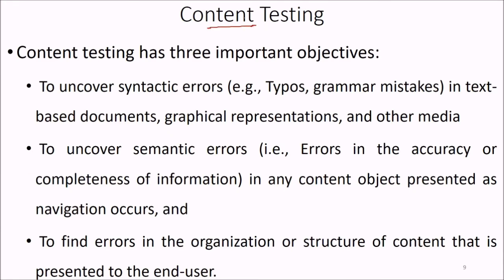In content testing, there are three important objectives. First, we want to uncover syntactic errors like typos and grammar errors in documents, graphical representations, and other media. Second, we want to uncover semantic errors — errors in the accuracy or completeness of information or any content object presented as navigation takes place. Third, we need to find errors in the organization or structure of content that is presented to the end user.